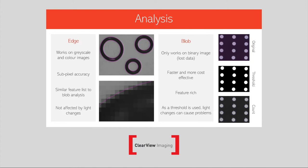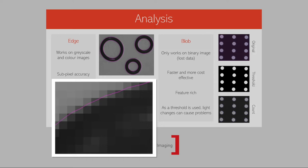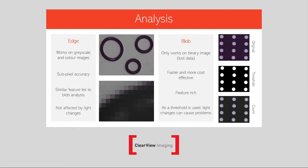Edge analysis works on both color and grayscale images. You can get sub-pixel accuracy, as shown in the image on the bottom left with the line passing through the pixels, and lighting changes will not affect the detection. Blob analysis is very basic and one of the first algorithms developed, but it's still important today. It's fast, cost-effective, and proven.